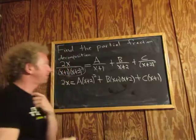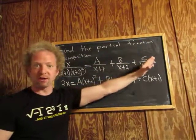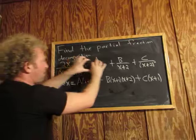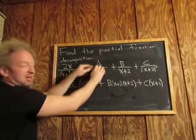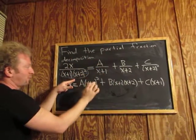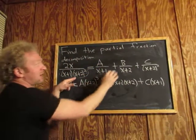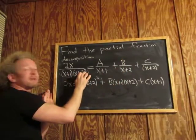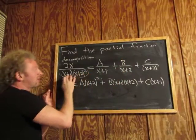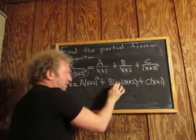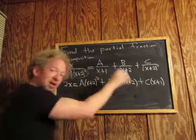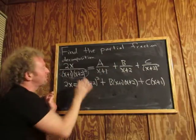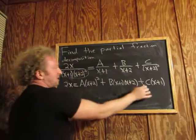So the first step is you write it out and set it up, then multiply through. This times that: (x+1) cancels, we're left with (x+2) squared. This times that: we have (x+2) here, so we lose one copy of (x+2), left with (x+1)(x+2). The last piece, C over (x+2) squared: both copies of (x+2) cancel, so we're left with C times (x+1).